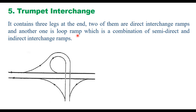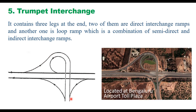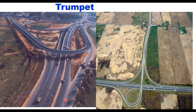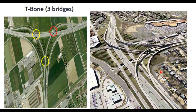In a trumpet interchange, the loop facilitates right turn from minor to major road and a semi-direct connection handles right turn from major to minor road. Different types of trumpet designs exist depending on land availability and desired speed. Another variation uses a direct semi-direct connection for right turning and one loop at a T-intersection. A related design called the T-bond provides no loop; instead, three bridges are provided and right turns cross at different levels, making it a more expensive structure.